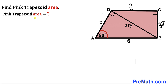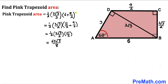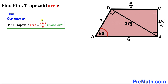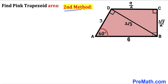Now let's calculate the area of the pink trapezoid ABCD using the trapezoid formula: Area = (1/2) × h × (a + b). Our height h = 3√3/2, base a = 6, and base b = 9/2. Substituting: Area = (1/2) × (3√3/2) × (6 + 9/2) = 63√3/8 square units, which is approximately 13.64 square units.